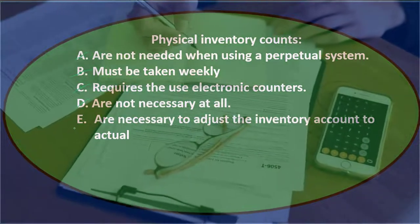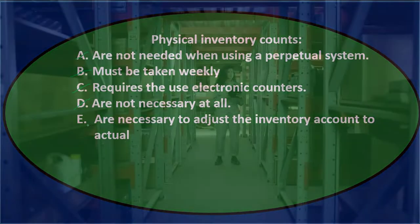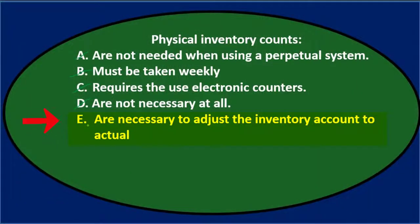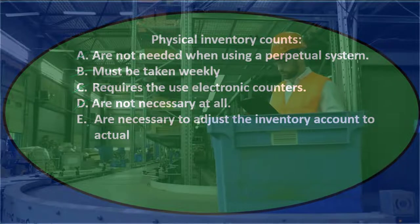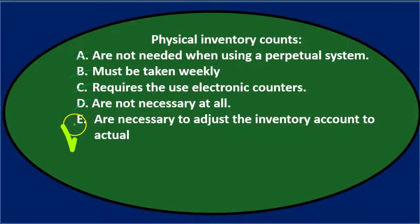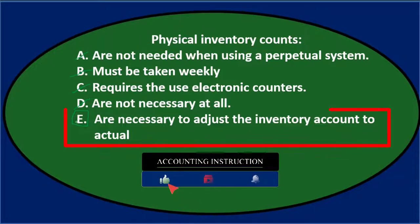Note that the physical count is necessary to adjust the inventory to actual. This might not be the first thing you thought of. Because if we're using a perpetual inventory system, our inventory should be fairly accurate as we go. But if there's any shrinkage or anything like that, the count will allow us to write down to the count. So the physical count is what we're ultimately going to go by. The answer: physical inventory counts, E, are necessary to adjust the inventory account to actual.